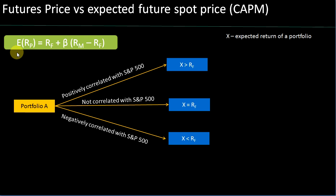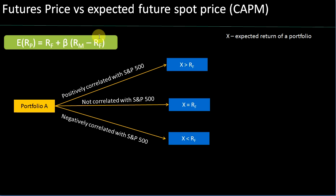In the capital asset pricing model, the expected return on a particular portfolio is linked to the risk-free rate plus beta times the excess return in the market over the risk-free rate. Beta tells us how sensitive a portfolio is compared to the market as a whole. That's what beta tells us — that's the return in the market and that's the risk-free rate, so you could call the difference the excess return in the market over the risk-free rate. This is the capital asset pricing model.